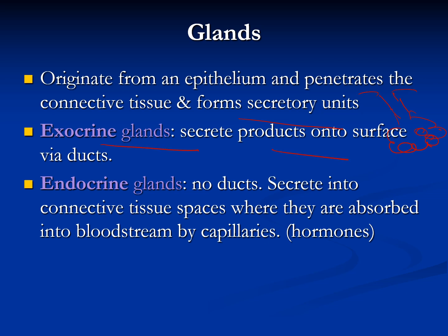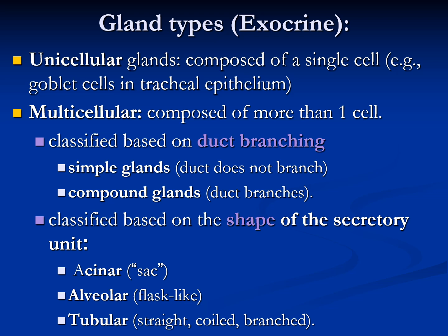Exocrine glands secrete their product onto the surface via a duct. Endocrine glands lose their duct; their product is released into the intercellular space, collected into the bloodstream, and transported to a target organ. In this lecture we will discuss only the exocrine glands; the endocrine system will be covered next semester.